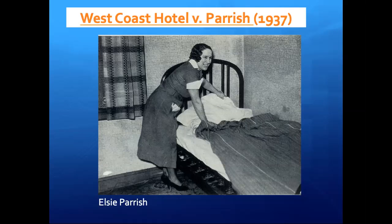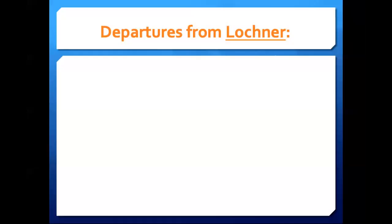Before West Coast Hotel versus Parrish, the court had upheld a prior law that had declared this type of minimum wage law for women to be unconstitutional as violating the 14th Amendment's Due Process Clause. But in West Coast Hotel, the Supreme Court upholds the state's minimum wage law against this kind of 14th Amendment challenge. The hotel owner argues that forcing him to pay women in his employ a minimum wage violated his liberty interest in the freedom to enter into employment contracts. But the court doesn't buy that.